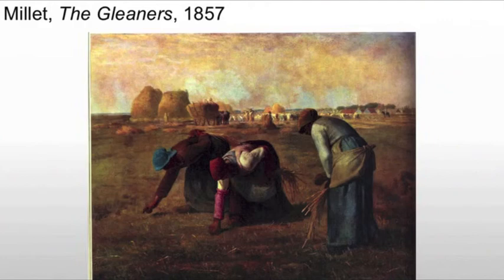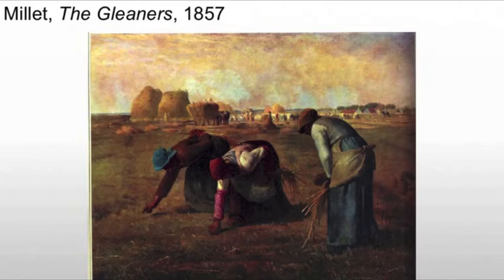Women are gleaning the last scraps of wheat. What's happening is the farmer — usually an upper-class landowner — as a form of philanthropy, will allow the poor in the community to glean the field. What that means is they get to walk through the field after the harvest, picking up the individual wheat berries that have been left by the farmers.